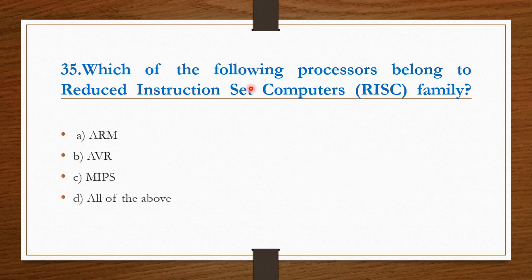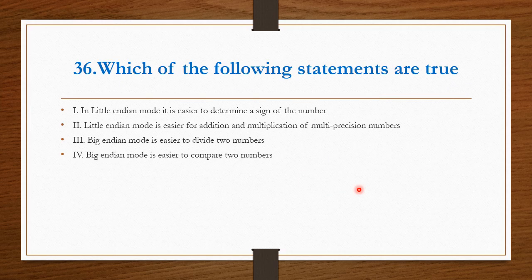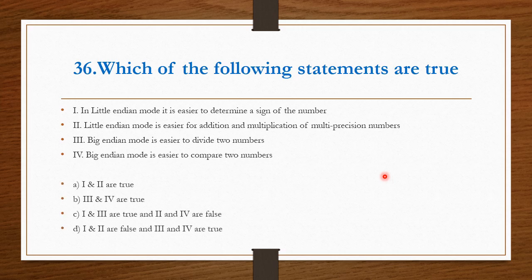Which of the following processes belong to the reduced instruction set computer family? ARM, AVR, MIPS, everything comes under RISC family. Therefore, option D is the right answer. Which of the following statements are true? Four statements are given. In Little Endian mode, it is easier to determine the sign of the number. Little Endian mode is easier for addition and multiplication of multi-precision numbers. Big Endian mode is easier to divide two numbers. Big Endian mode is easier to compare two numbers. Answer is option D. Because first two statements are false, third and fourth statements are true.